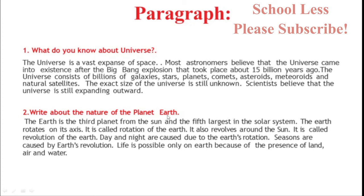Write about the nature of planet Earth. The Earth is the third planet from the Sun and the fifth largest in the solar system. The Earth rotates on its axis — this is called the rotation of the Earth. It also revolves around the Sun — this is called the revolution of the Earth. Day and night are caused due to the Earth's rotation. Seasons are caused by Earth's revolution. Life is possible only on Earth because of the presence of land, air and water.